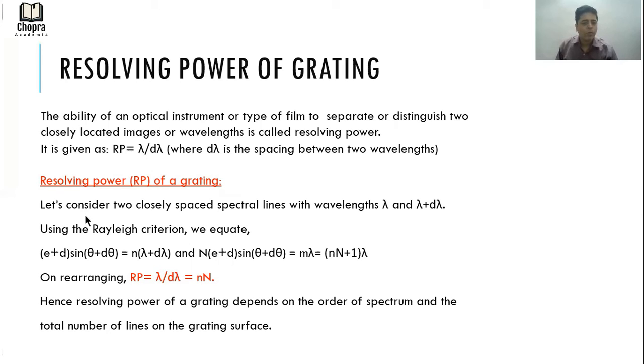As I showed in the Rayleigh criterion, two images have different wavelengths λ and λ plus Dλ. Using the Rayleigh criterion, we can equate the principal maxima of first one matching with the minima of the second one, so we can equate their formulae, their equations.